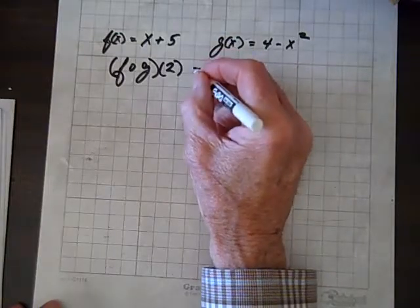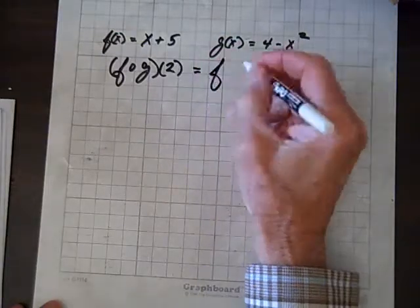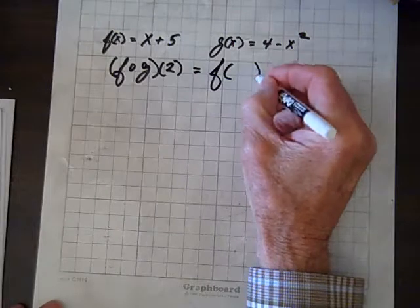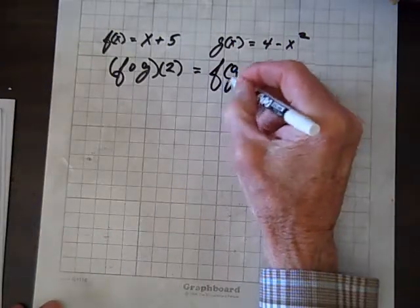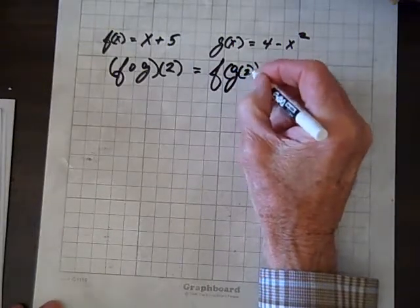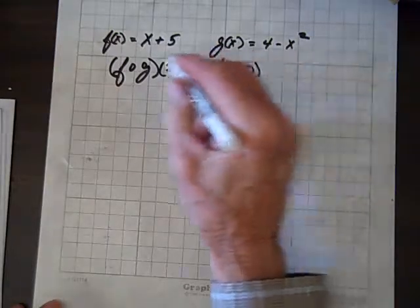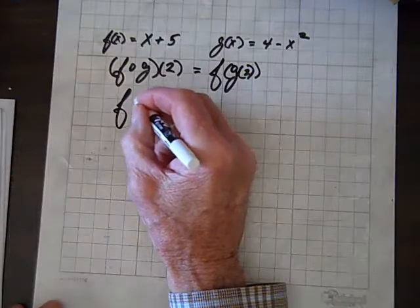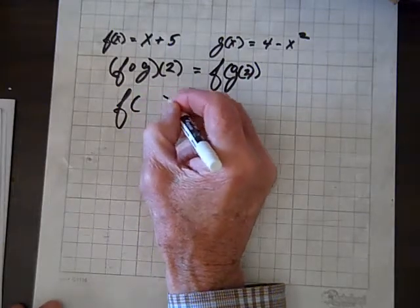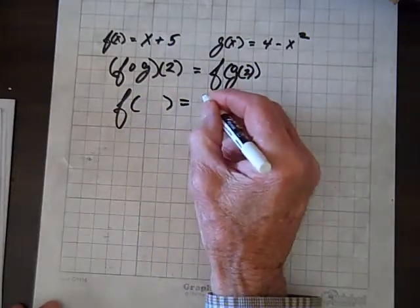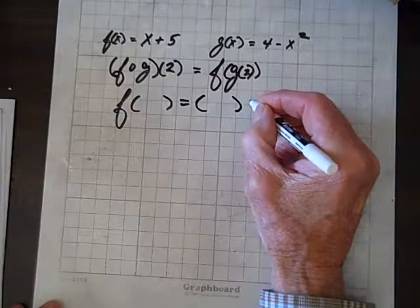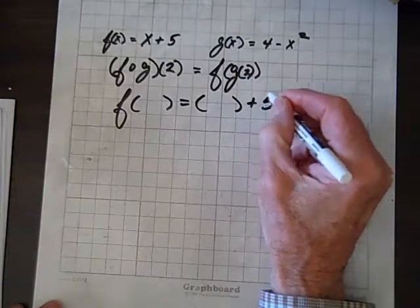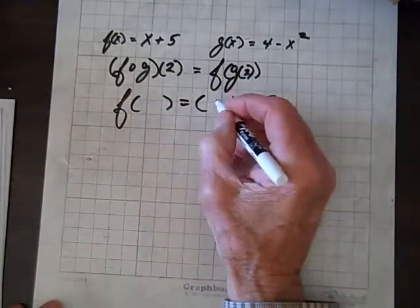Well, what this means is f of g of 2, and we know f is, so f of whatever equals whatever plus 5. So, whatever we put here, we must put there.